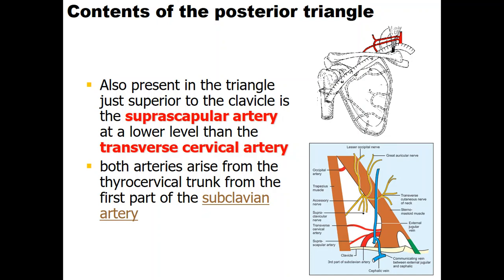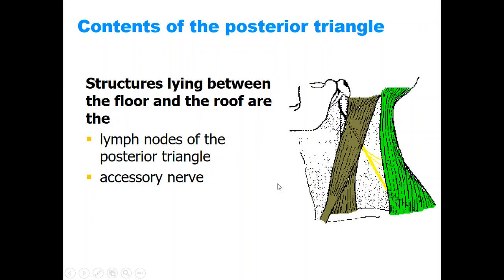In the lower part of the triangle, there are two important arteries: the transverse cervical artery in a higher position and the suprascapular artery lower. Both are branches of the thyrocervical trunk, which is a part of the first part of the subclavian artery. These structures are at risk in injuries such as a fracture of the clavicle or a stab wound in the posterior triangle at this point.